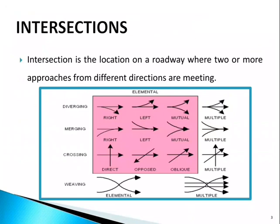In a merging type intersection, approaches will merge with the main approach — it can be from the right, from the left, or sometimes from both directions, and also can be multiple. In crossing type intersections, approaches can be direct, opposed, oblique, and also multiple.